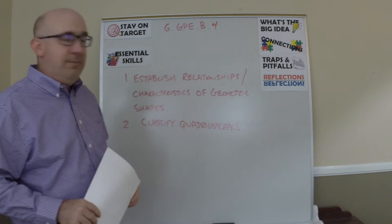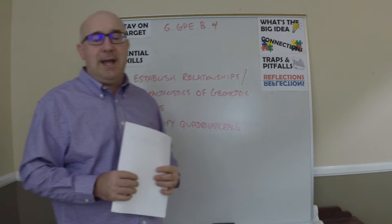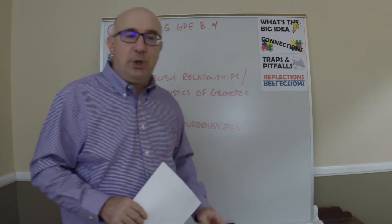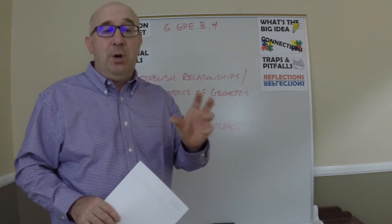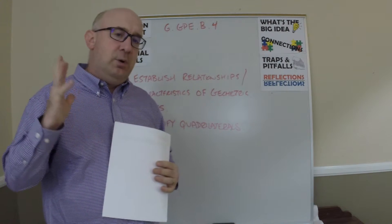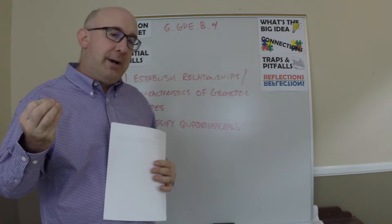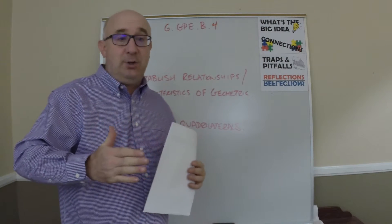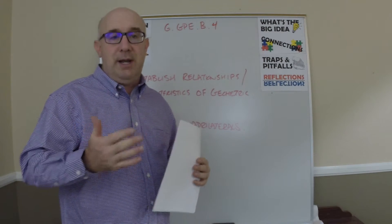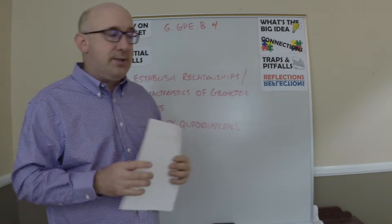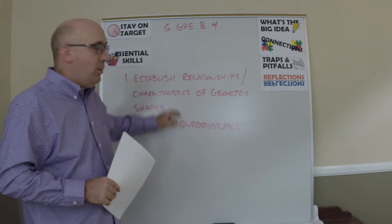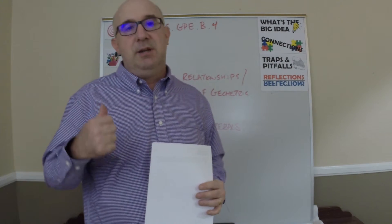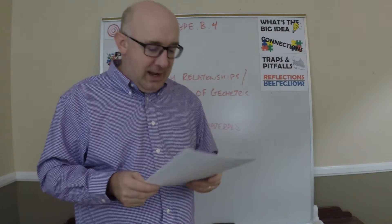And then the idea of classifying a quadrilateral — this is where we get into something sometimes called coordinate proof, where we get into the idea of: if I give you some generic values, can you establish if it's a rectangle always, or a parallelogram always, those kinds of things? And here we're just proving or establishing things using our formulas that we already have.